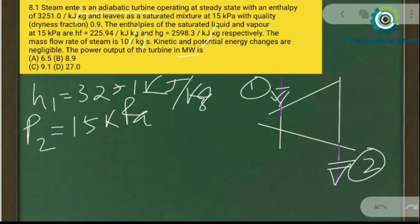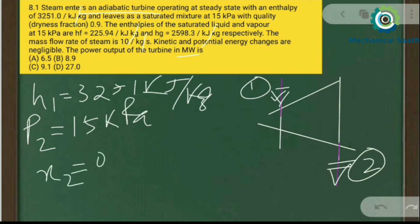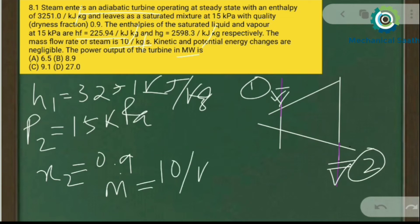At state 2, the dryness fraction x2 is equal to 0.9. The values of hf and hg at 15 kPa are also given. The mass flow rate, m-dot, is given as 10 kg/s.